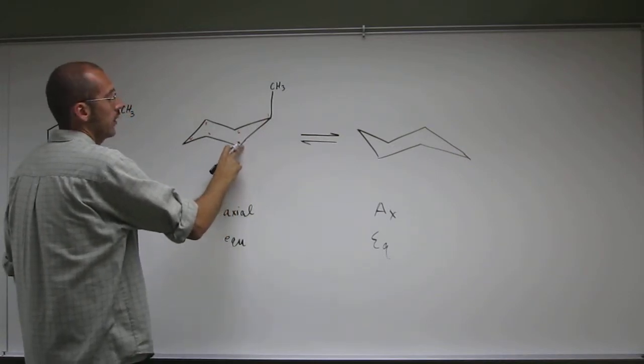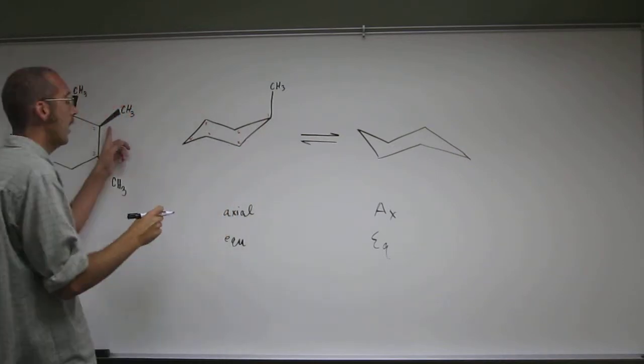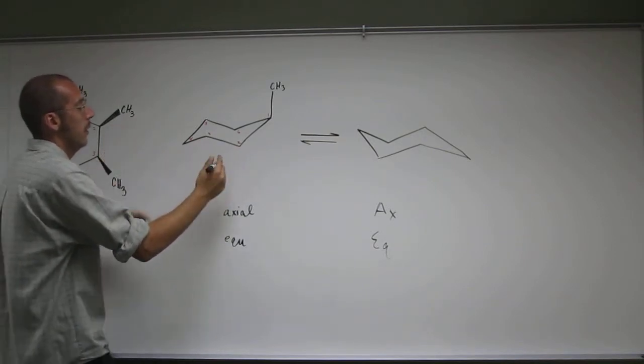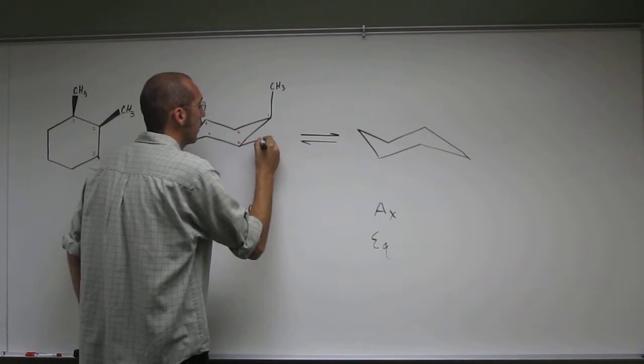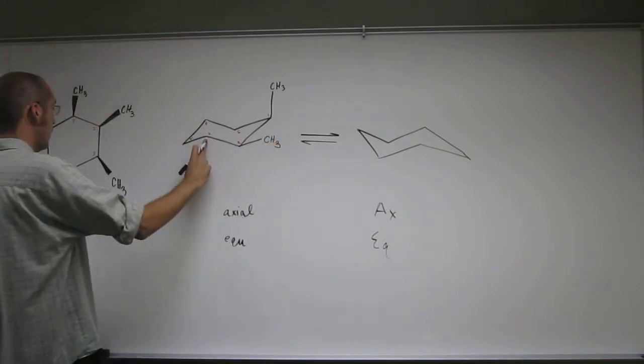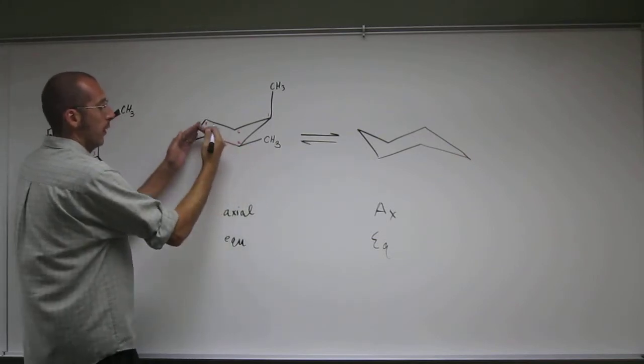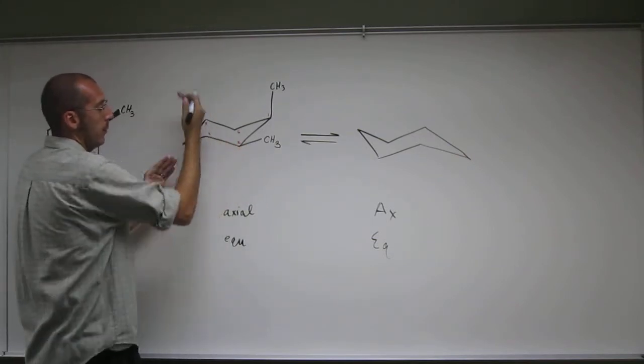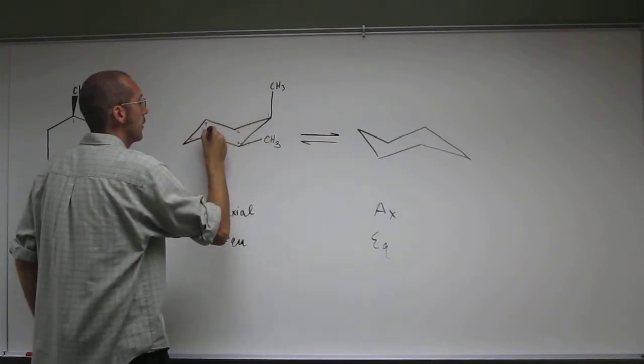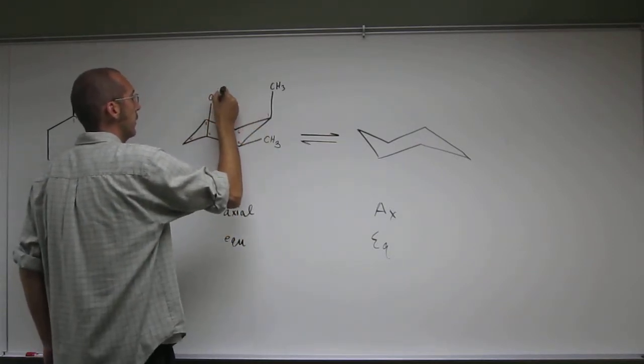2 is up, right, but down would be axial here, so up must be equatorial. And then 3, up, remember when it's pointed up, the up is going to be axial. When it's pointed down, the down's going to be axial. So this one's pointed up, so the up is axial.